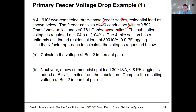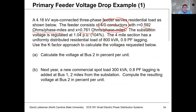For 4-aught, we have an equivalent per-phase resistance of 0.592 ohms per phase-mile and a reactance of 0.761 ohms per phase-mile. Later on in the course, we'll show you how to do those calculations. The substation voltage is regulated at 1.04 per unit, or 104%. Initially, this 4-mile section has a uniformly distributed residential load of 800 kVA at a power factor of 0.9 lagging.